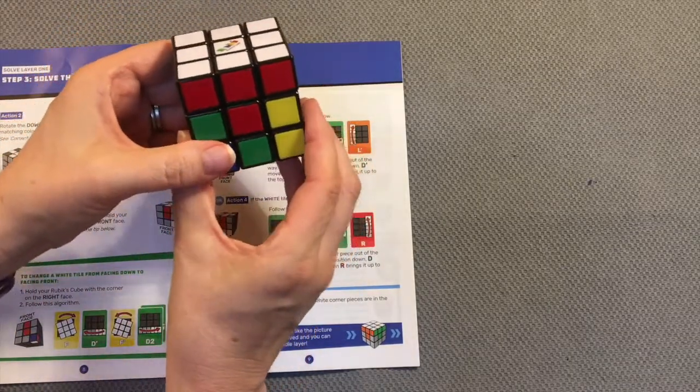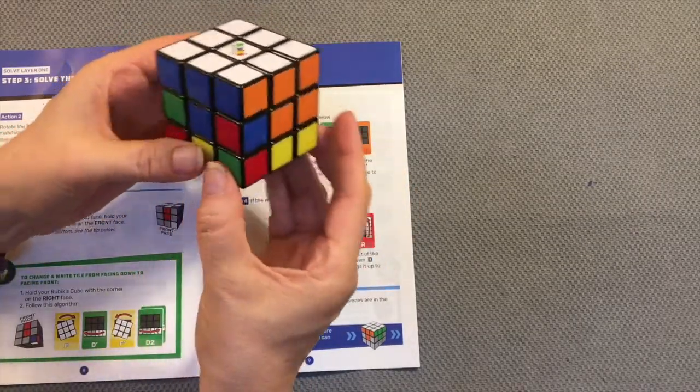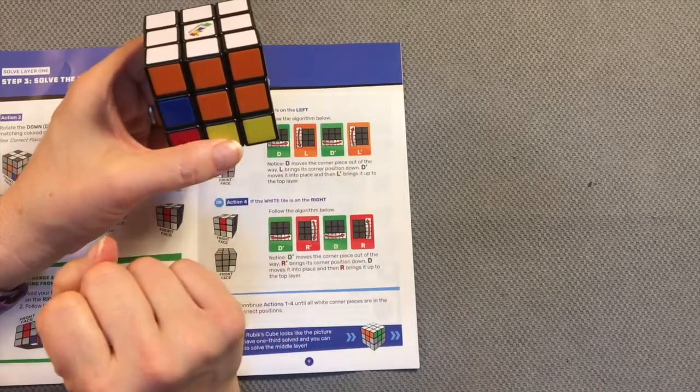I now have my completed top layer. If I turn my cube, I verify that all of my colors match their center piece. All of my tiles on the top layer match the center piece.